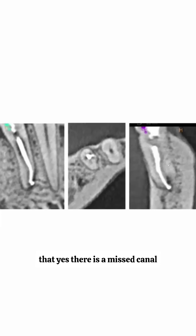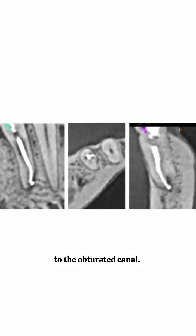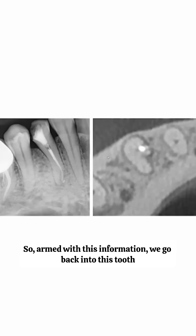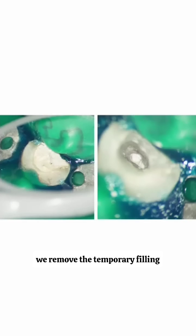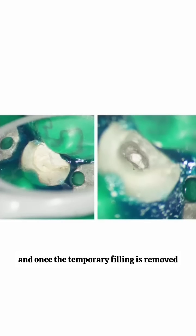What the cone beam CT tells us is that yes, there is a missed canal or root, and the missed root is lingual to the obturated canal. Armed with this information, we go back into this tooth and remove the temporary filling.